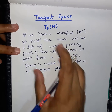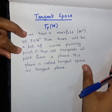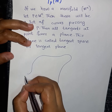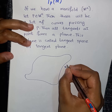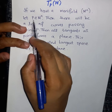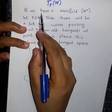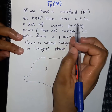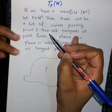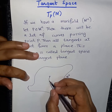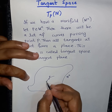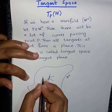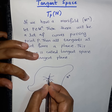The definition says that if we have a manifold M^n — let's say this is a manifold M^n — and let p be a point that belongs to this manifold having n dimensions. Then there will be a lot of curves passing through the point p. For example, this is a curve passing through point p, this is again a curve, and you can draw a lot of curves that pass through this point.